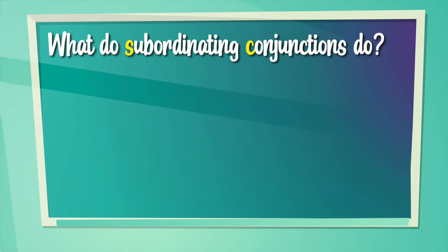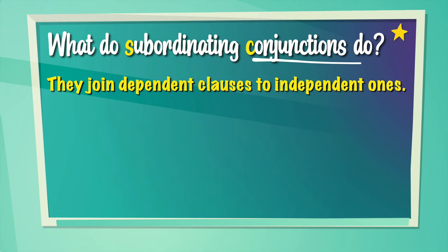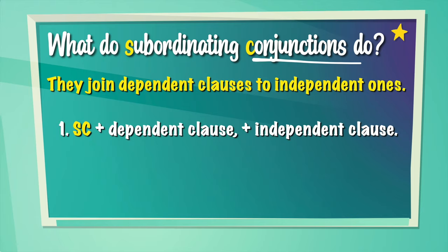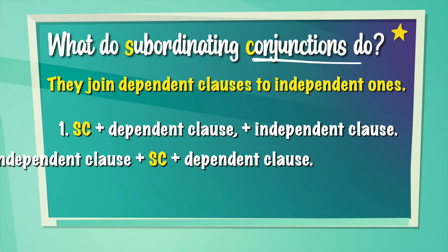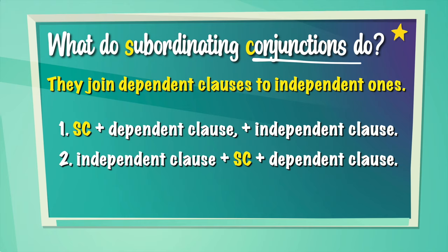So what do subordinating conjunctions do? They join dependent clauses to independent ones. For example: subordinating conjunction plus dependent clause, comma, plus independent clause. Or it could be independent clause plus subordinating conjunction plus dependent clause. Please notice that the subordinating conjunction goes before the dependent clause.